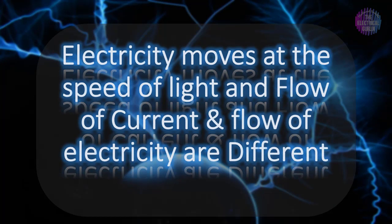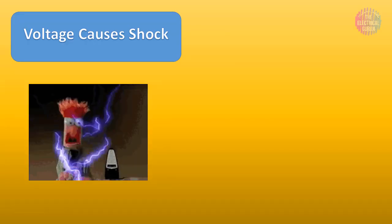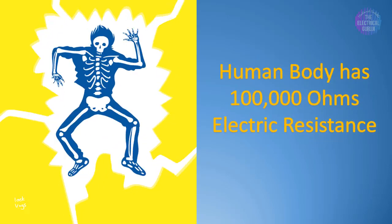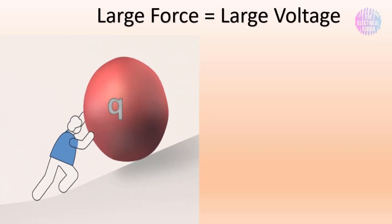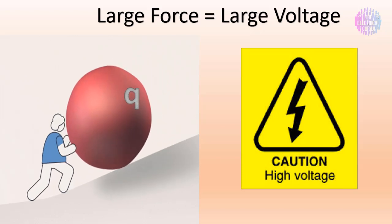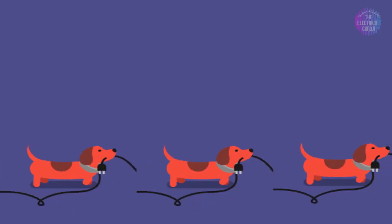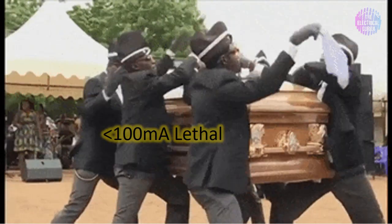Let's move to our final misconception, number five: current causes electric shock. Actually, current doesn't cause the shock — it's the voltage that causes the shock, but it's the current that causes the damage. The human body has a resistance of 100,000 ohms, which is really huge. So in order to force current to flow through our body, we require a large amount of voltage. However, it's the large current that causes severe damage. If current beyond 10 milliamperes flows through our body, we start to feel pain, and if the current exceeds 100 milliamperes, it's lethal.